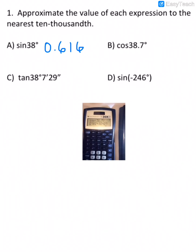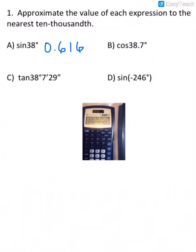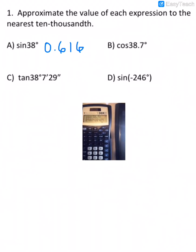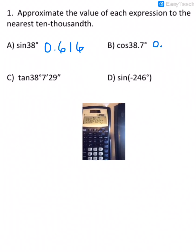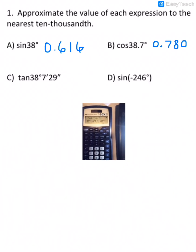And then again we're going to round to the nearest 10,000th, so this would be 0.780, because the next number is a 4, so we wouldn't round that up to a 1.